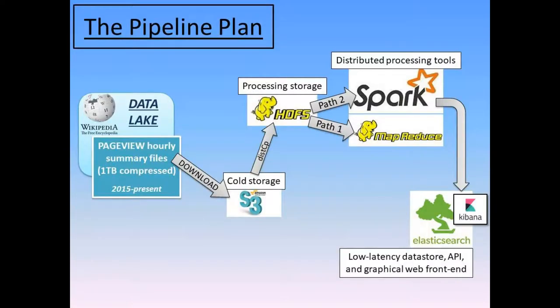Here's the pipeline I designed to do that. Raw hourly page view data — one terabyte compressed, over three terabytes uncompressed — is downloaded from the Wikimedia Foundation's servers and put into cold storage in Amazon's S3. When it's time to kick off processing, the raw data is loaded to HDFS, enabling processing on two different possible paths for aggregation and transformation. I spent a little time working with the first path, MapReduce, and found it useful to do low-level procedural prototyping there before going on to the main work of the project. Configuring Spark and its more abstract RDDs to do the complete job of aggregation, sorting, and denormalizing into JSON-formatted output that would directly feed into Elasticsearch, and then use Kibana as a tool to browse and graph the trending data.